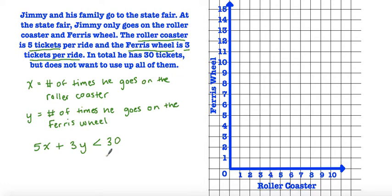If it had an equal sign, this would be the same thing as an equation in standard form, but this time it's just an inequality in standard form. In order to graph it, the easiest way is to find the x and the y intercept.